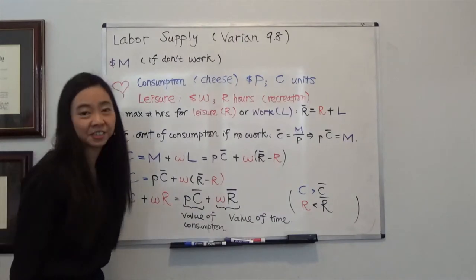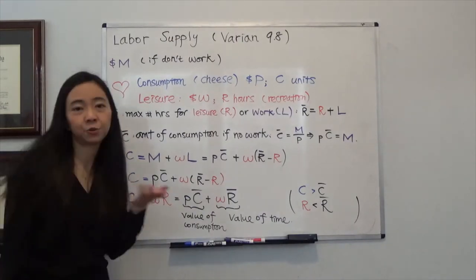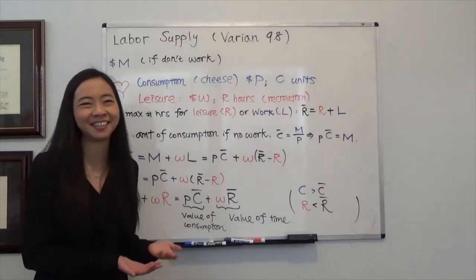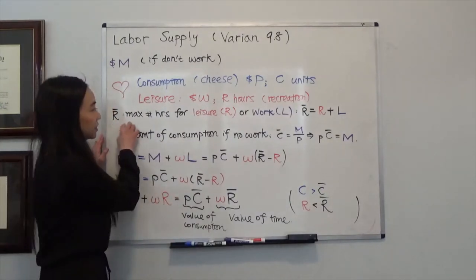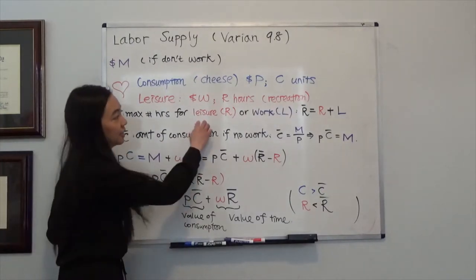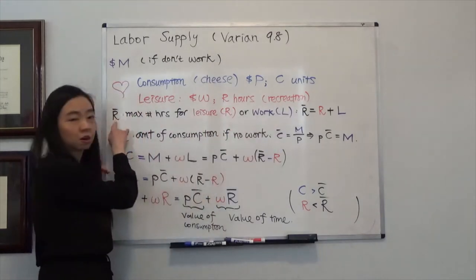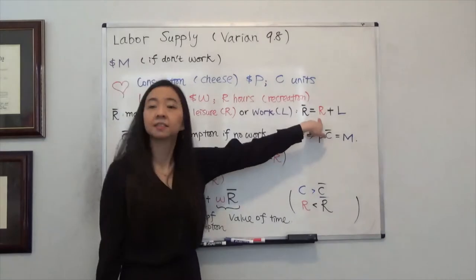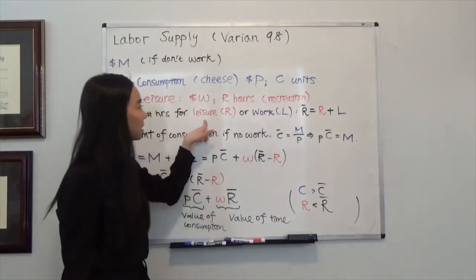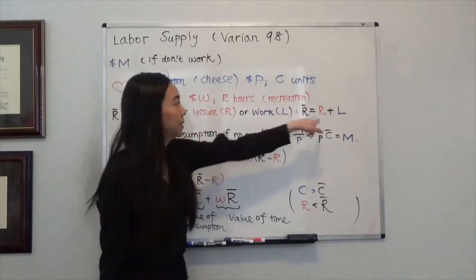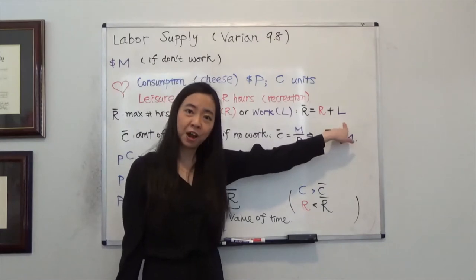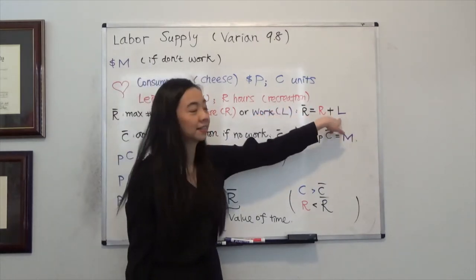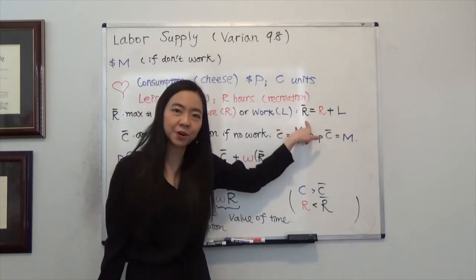You can think of R bar as 16 hours, because even though you have 24 hours, you need to sleep, you need to brush your teeth. So the maximum amount of time you can spend on either leisure or work will be R bar hours. And R bar equals R — the number of hours you spend on leisure — plus L, the number of hours you spend on work. So R plus L equals R bar.